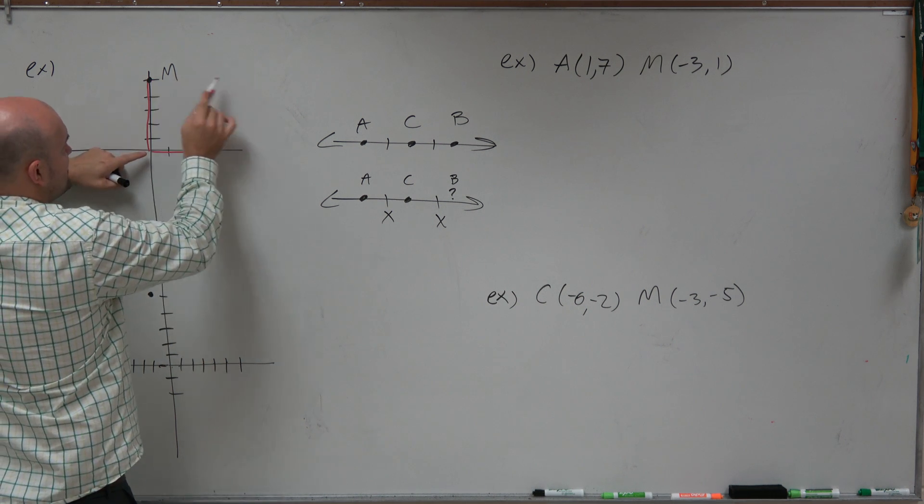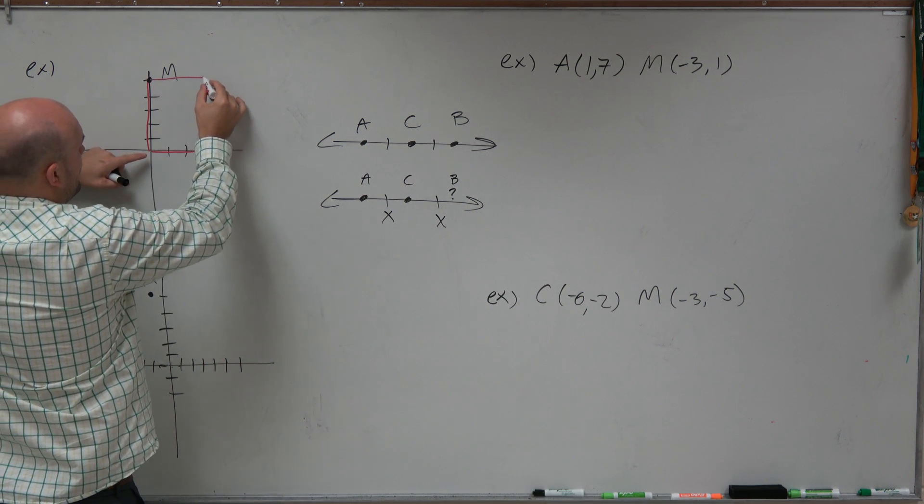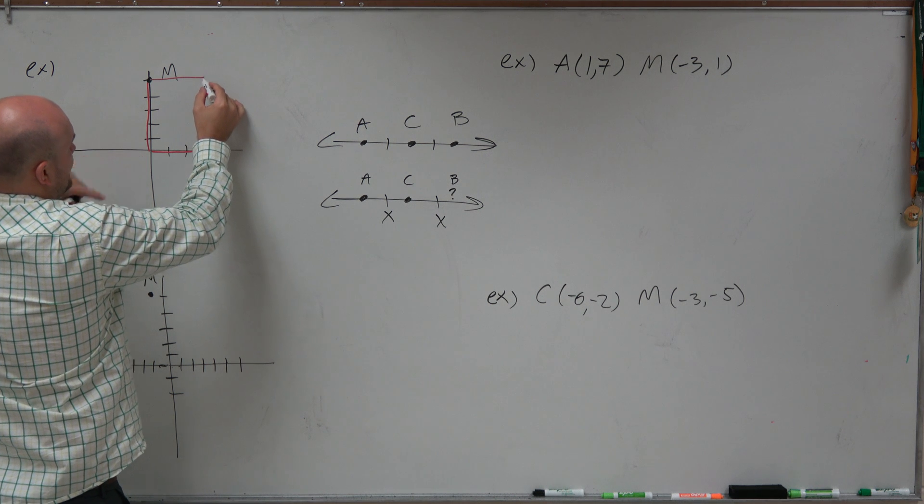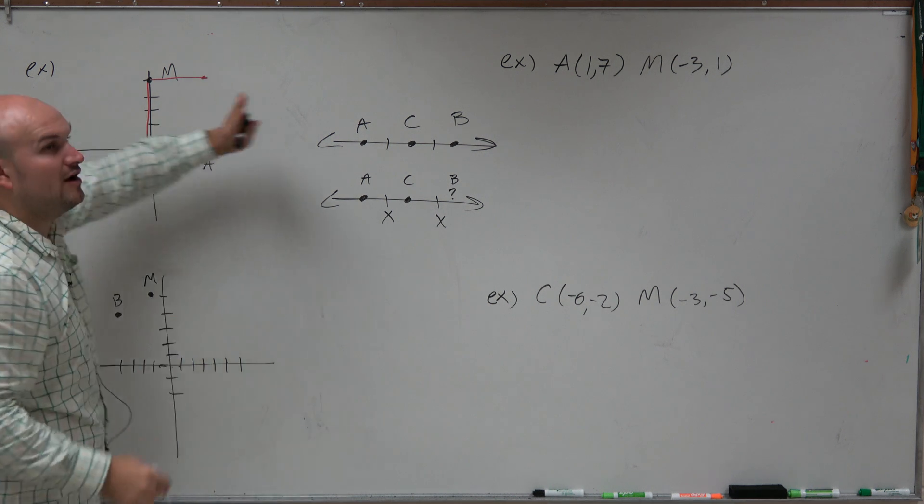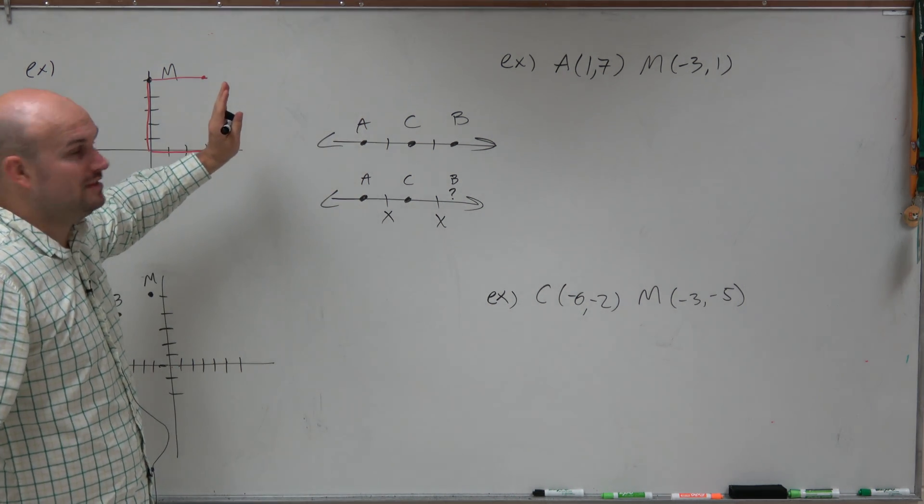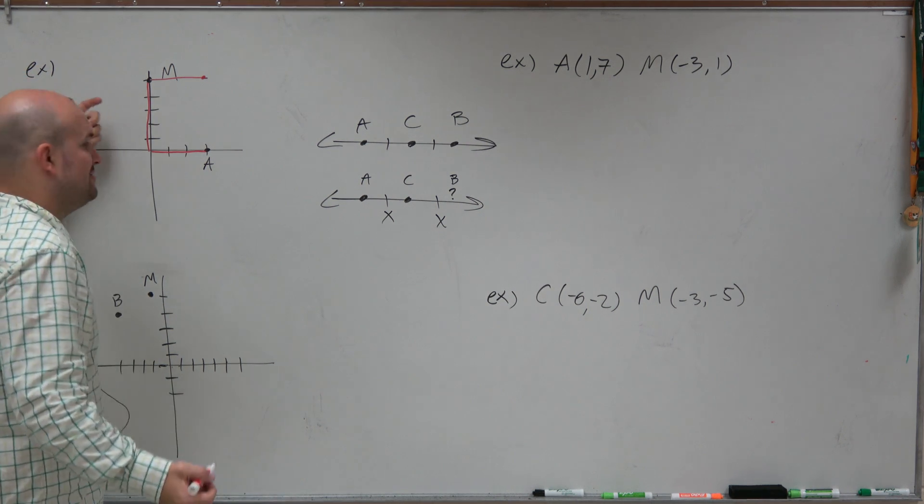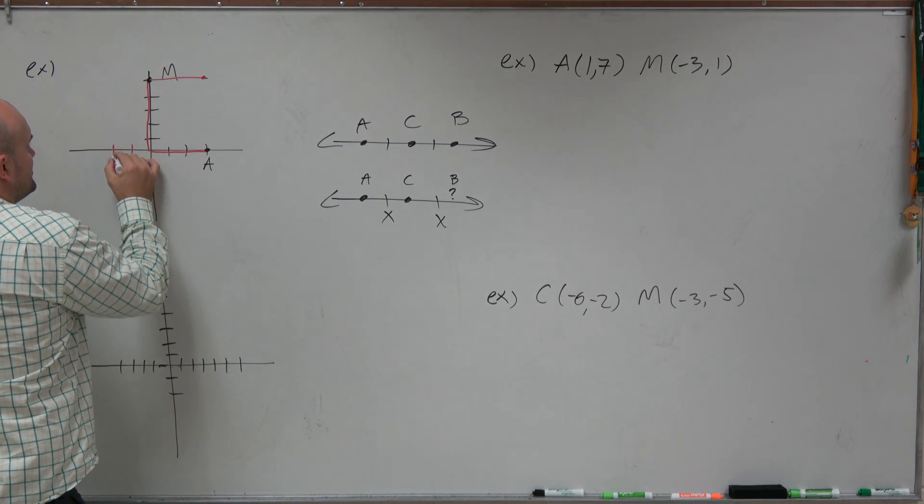To go from M to A, I had to travel how far horizontally? One, two, three. Right? So therefore, how far to the left am I going to have to travel to get to my next point? Well, again, it's going to be 3. So I'll just go over 1, 2, 3.